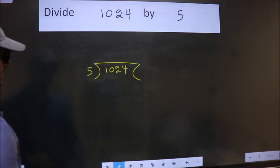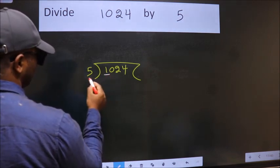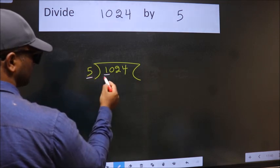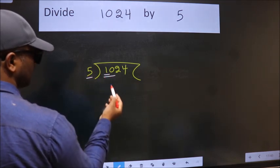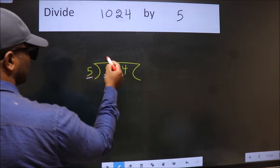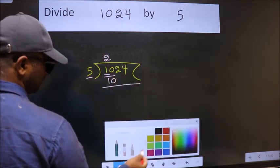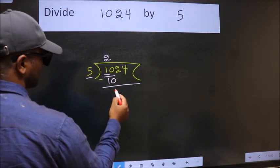Next, here we have 1, here 5. 1 is smaller than 5, so we should take two numbers, 10. When do we get 10 in 5 table? 5 times 2 is 10. Now we should subtract. We get 0.